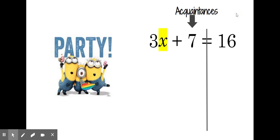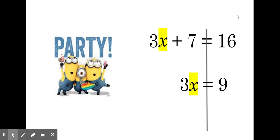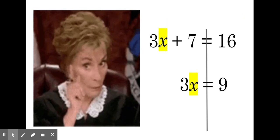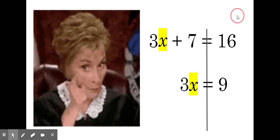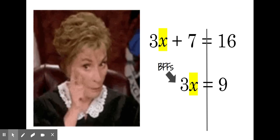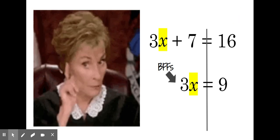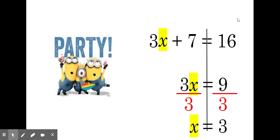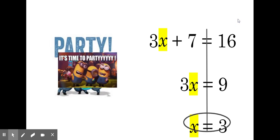To undo a plus seven, we're going to subtract seven from both sides of the equation. When we do that, we'll bring down 3X equals 9. Now mom comes down and says the party is over — it's time to send everybody home. We're going to have to send home our BFFs. It looks like we have multiplication with 3X, so we're going to undo it with the inverse, which is division. We'll divide both sides of the equation by three.